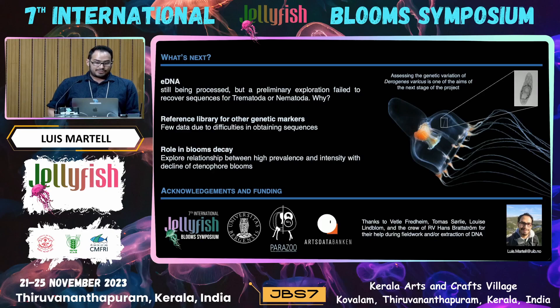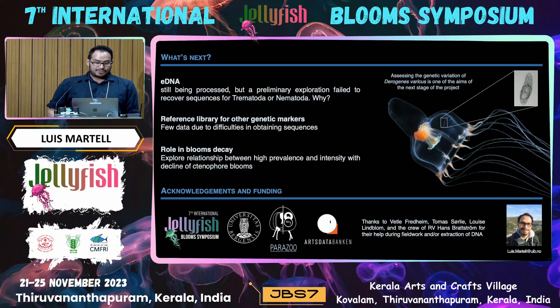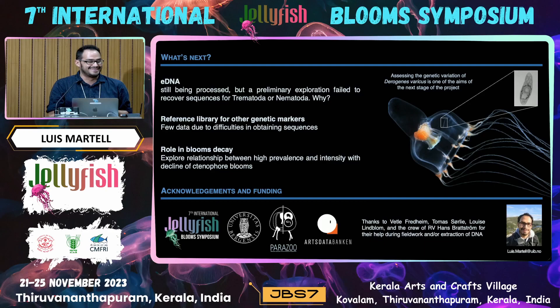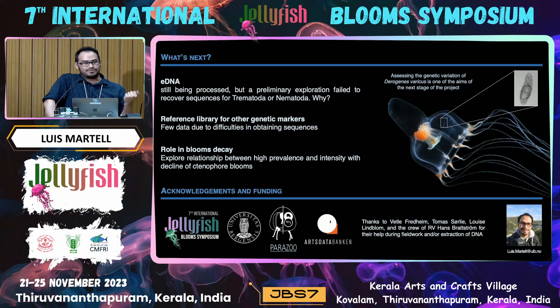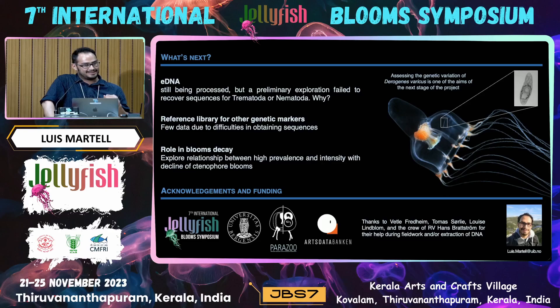What's next: the eDNA is still being processed, but I did a preliminary quick-and-dirty exploration of the data so far and I cannot find trematodes, nematodes, or cestodes in the data — which is not surprising. I'm looking at two genes: one fragment of the 18S and CO1. So maybe eDNA may be useful to monitor the jellies, but perhaps it's really not good for the parasites — we have to see. Our reference library is still being built.